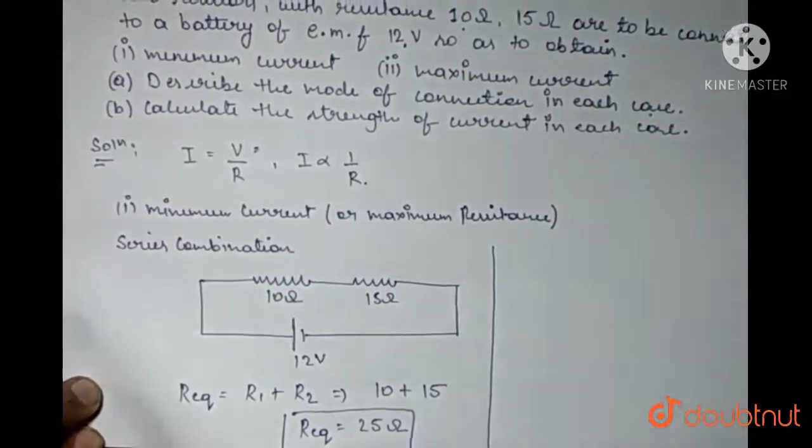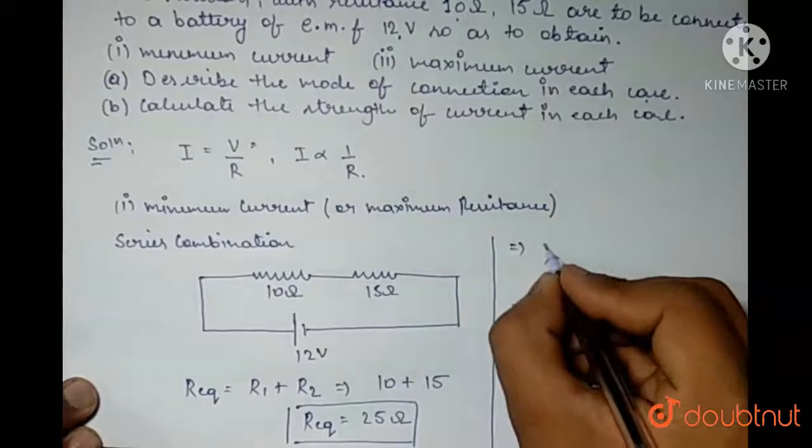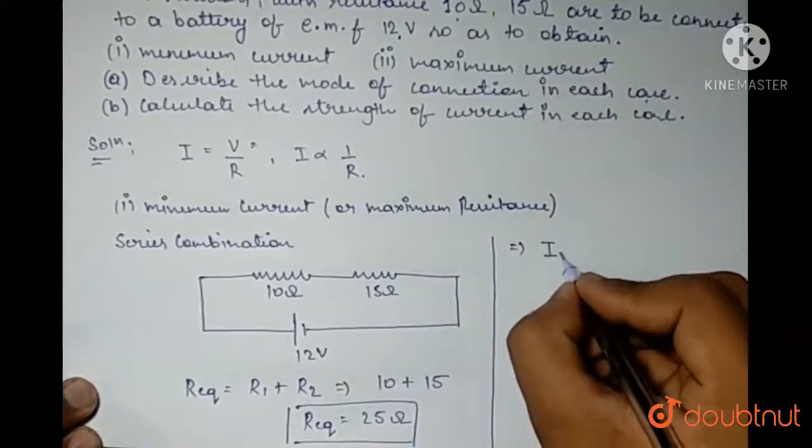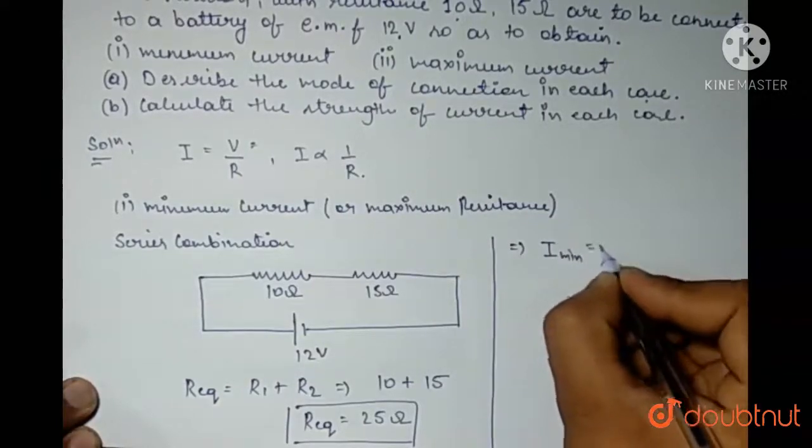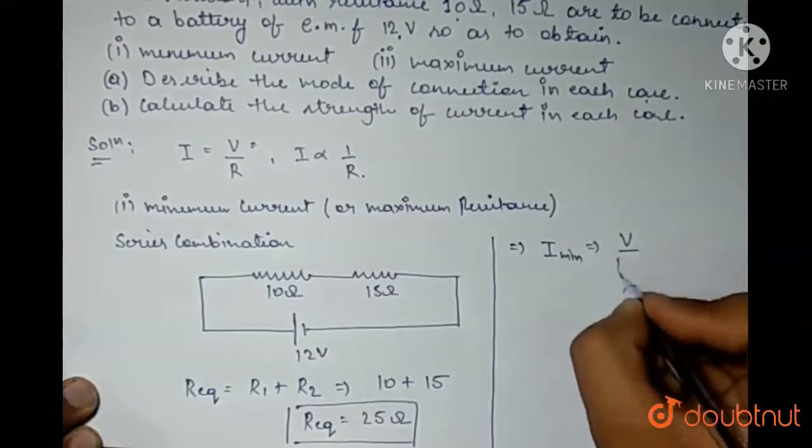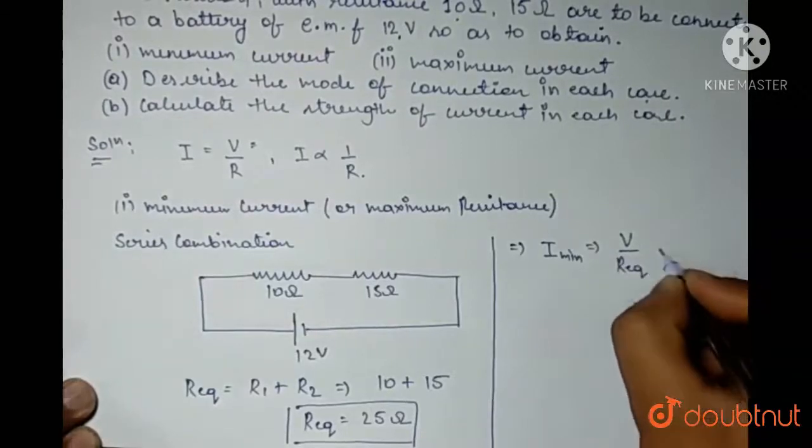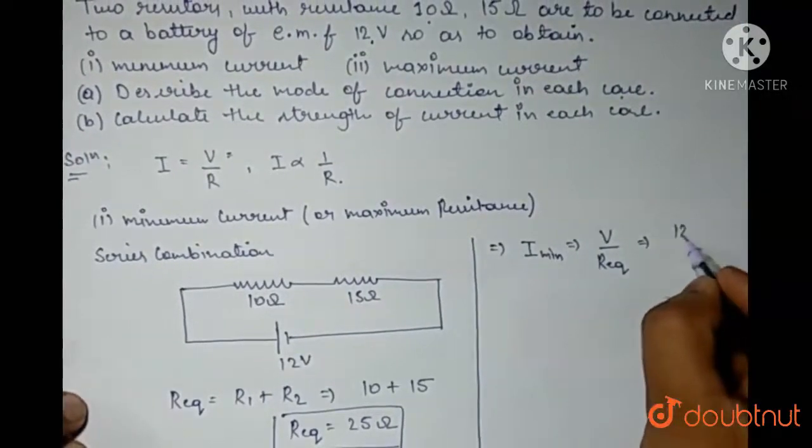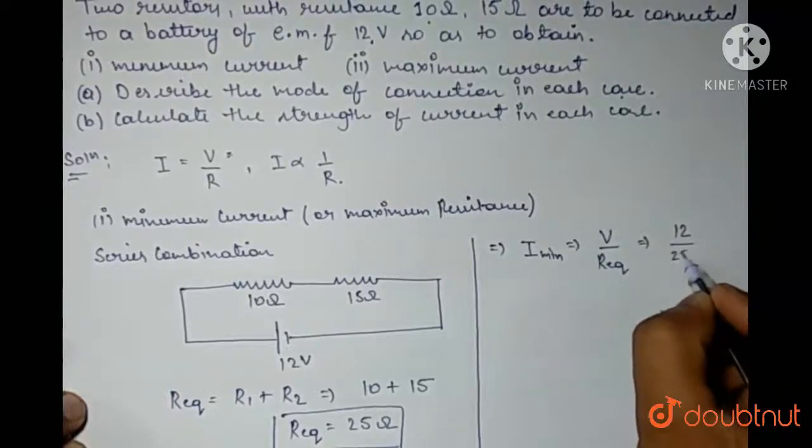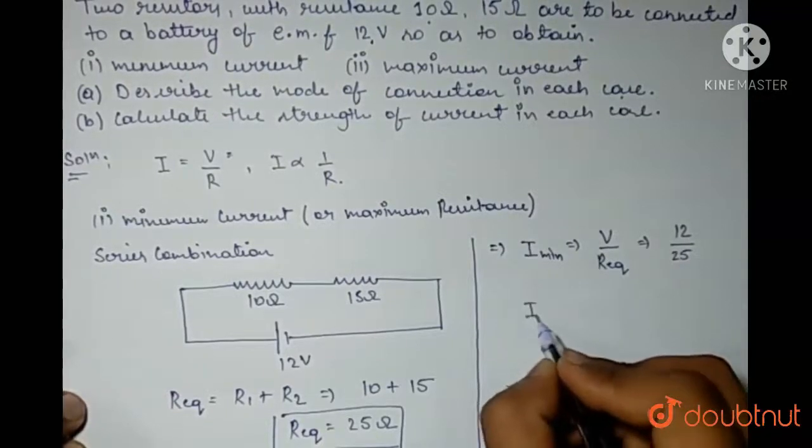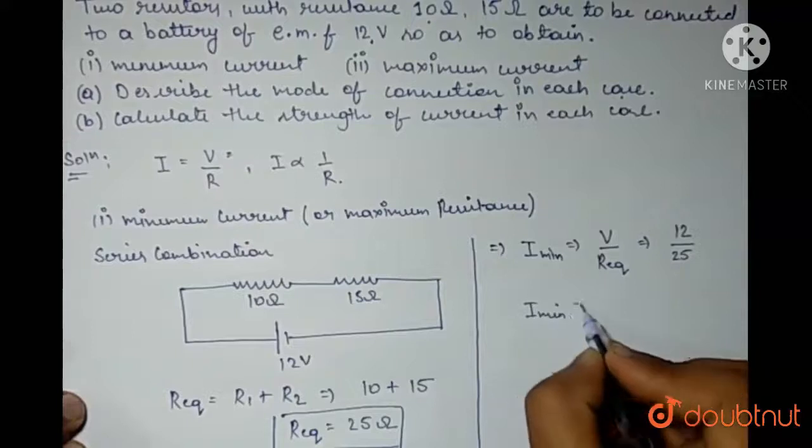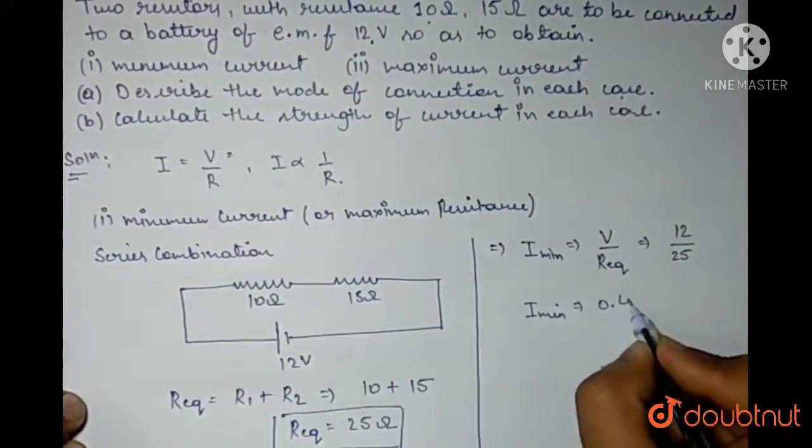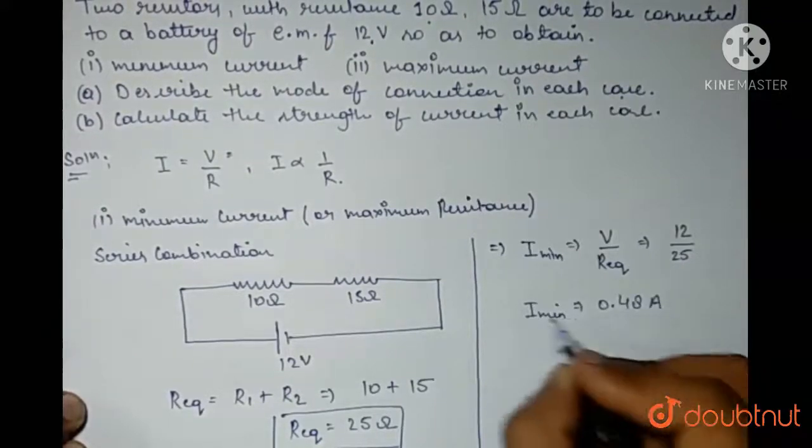Accordingly, I have to calculate the current. I minimum is V upon R equivalent in series. So, what is the value of V? Here, V is 12 volt and it is 25. So, the I minimum would be 0.48 amperes.